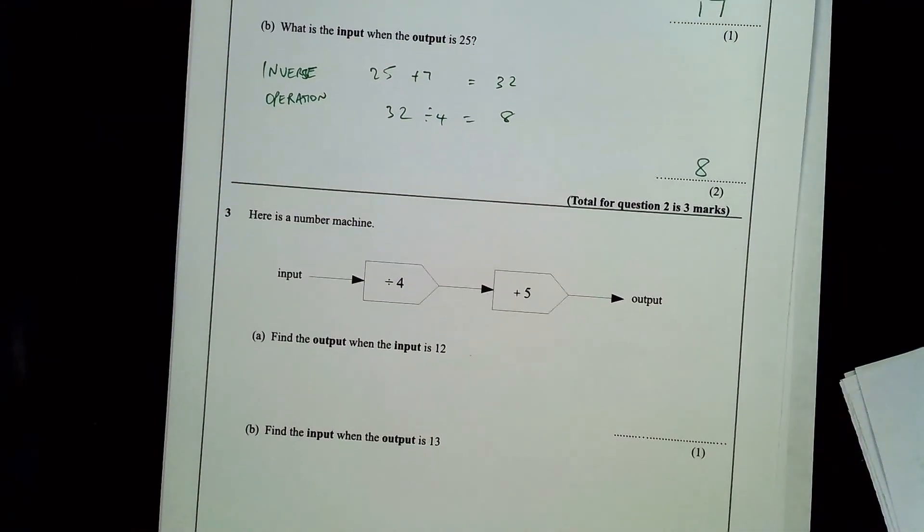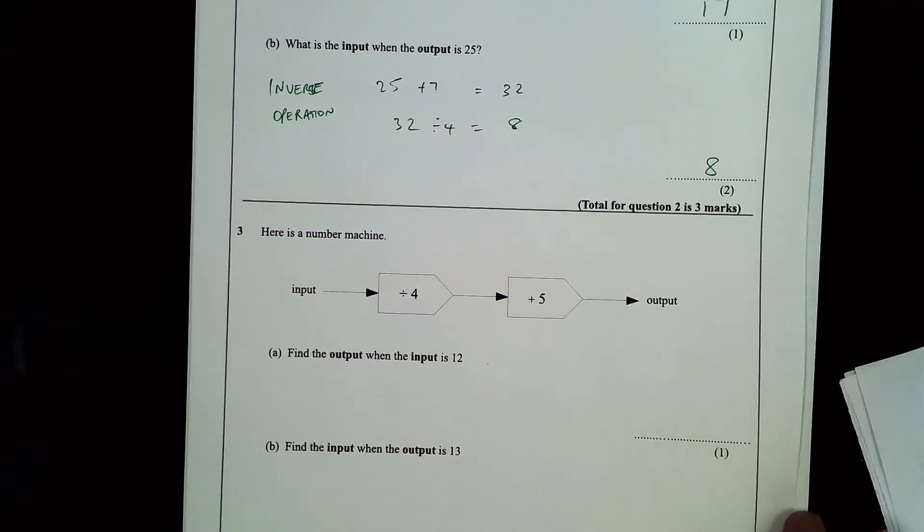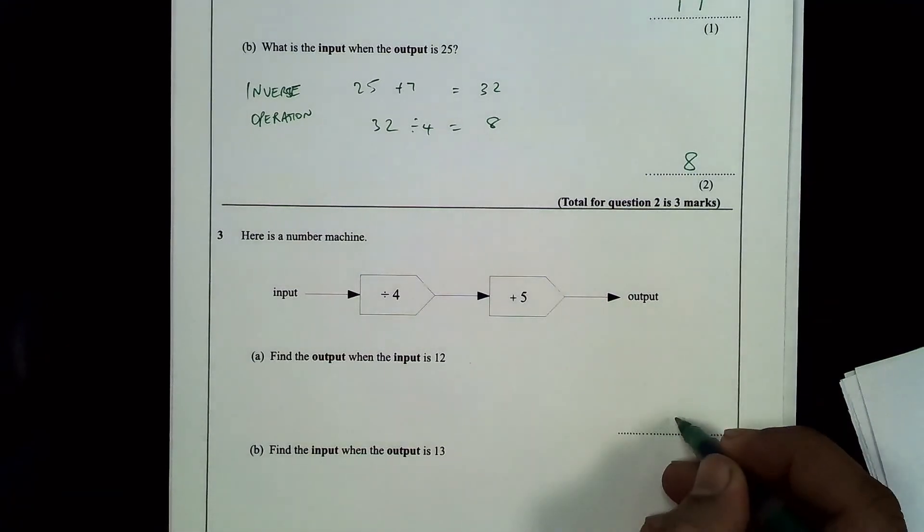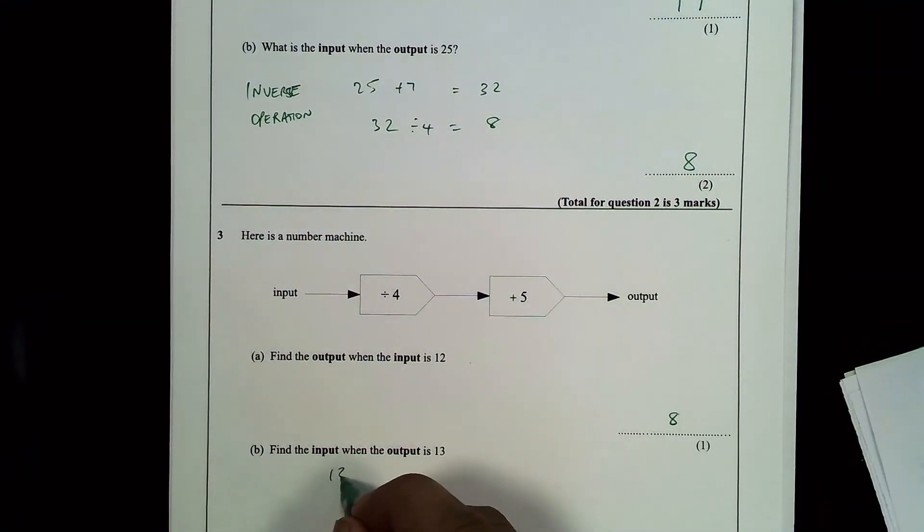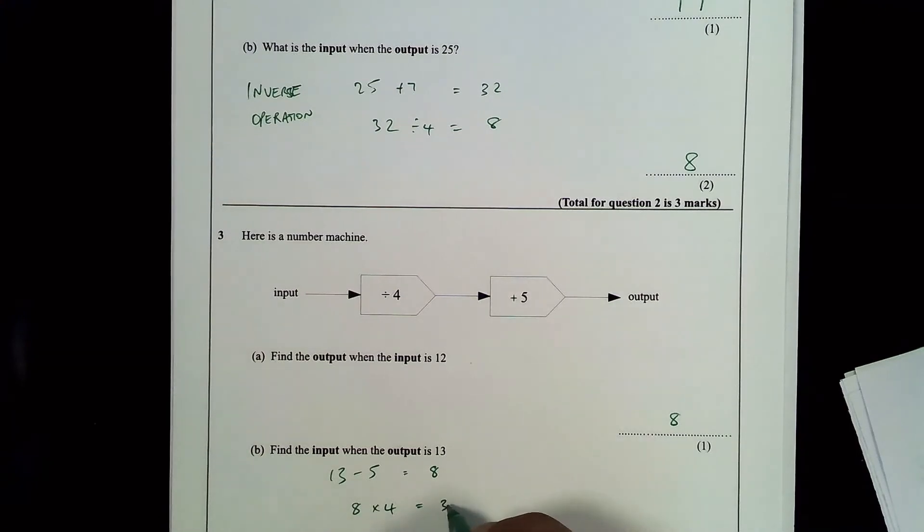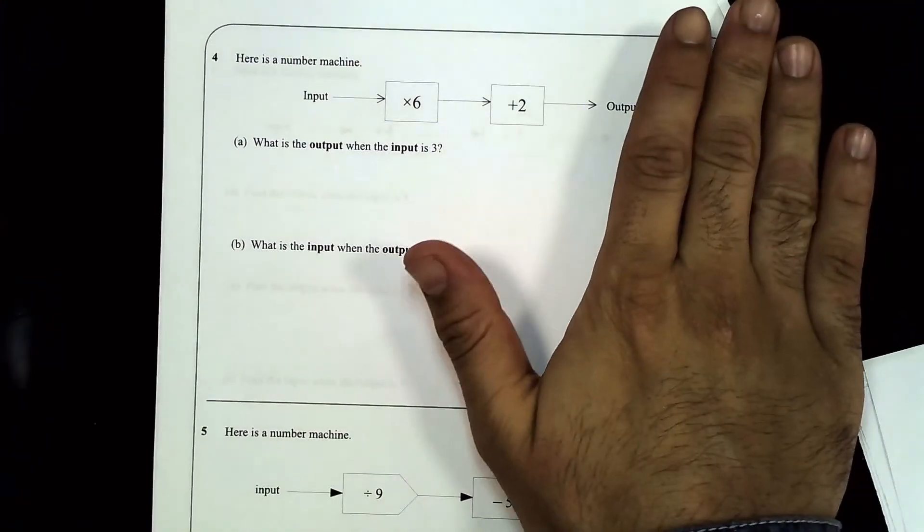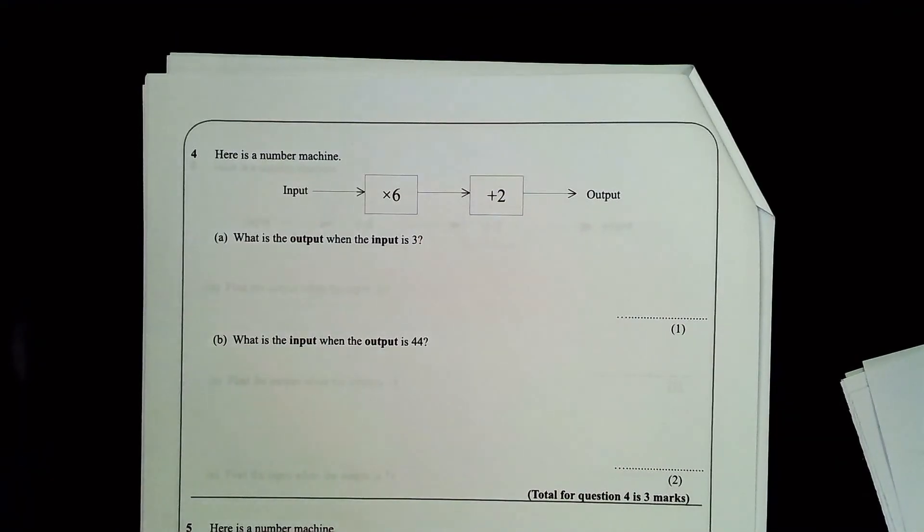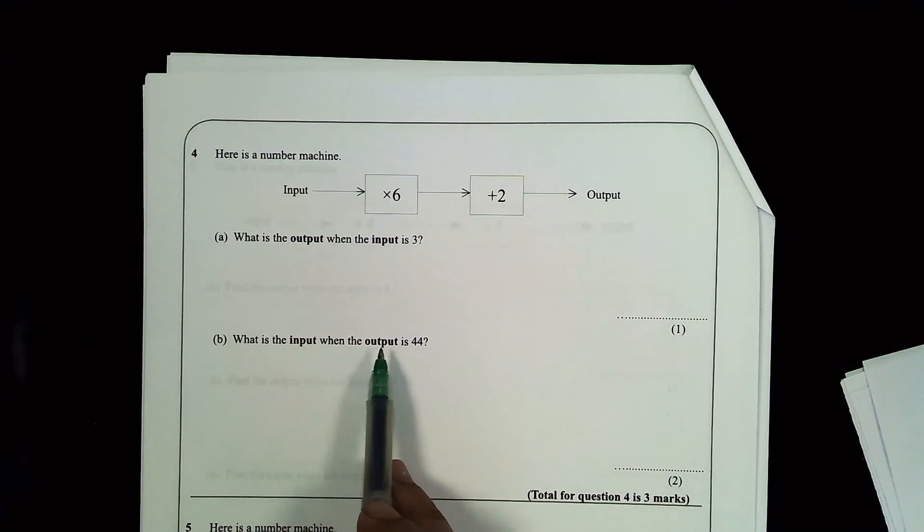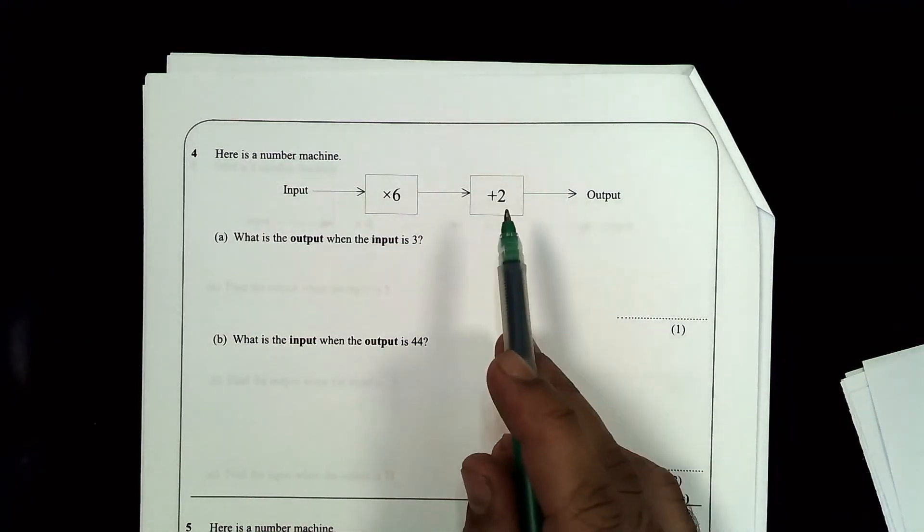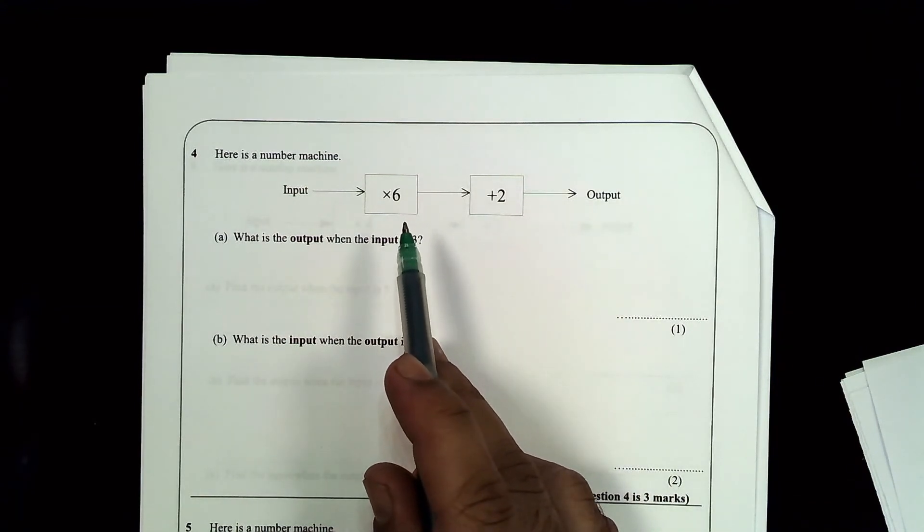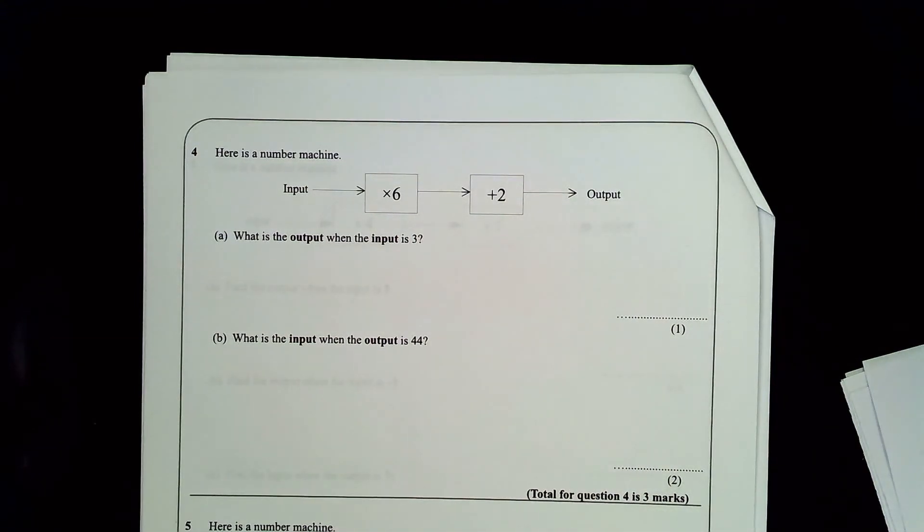And that's how you work out the input. Let's take a look now at question three. Please pause the video and try it yourself. One more question for you to try yourselves. Please remember, for part B, you want to work backwards. So if the output's 44, you're going backwards, you need to do the opposite of that, then the opposite of that. Please pause the video now and have a go.